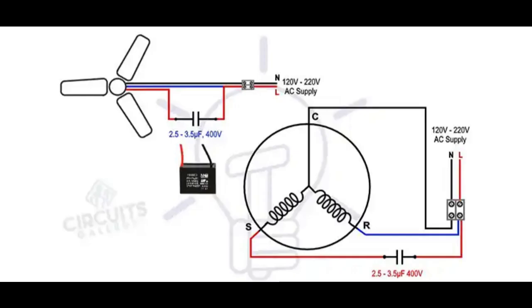Multiple speeds: Ceiling fans often have multiple speed settings to control the airflow. Capacitors with different capacitance values are used to achieve different speeds. By switching between capacitors of varying capacitance,